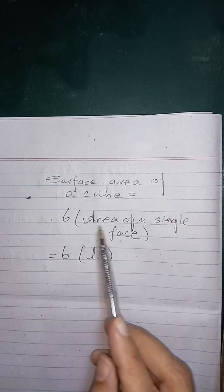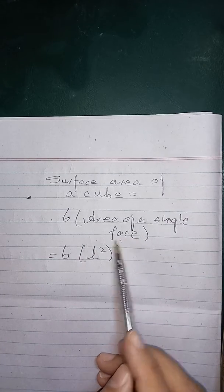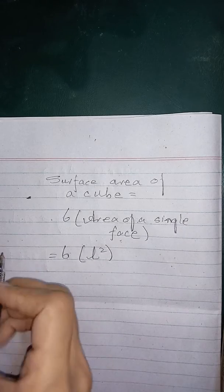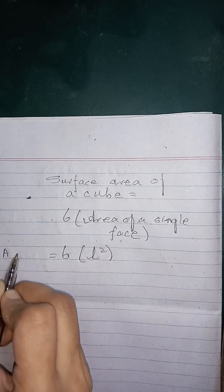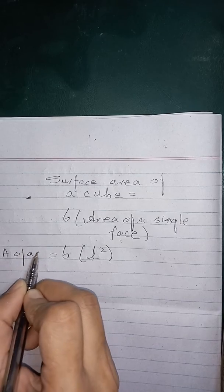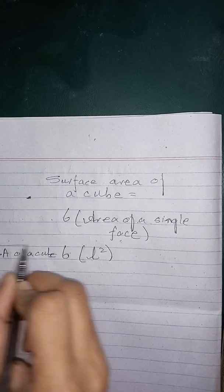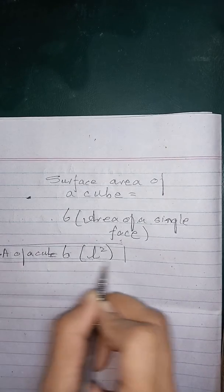What is the area of a single face? It is L times L and L square. So the total surface area of a cube will be 6 L square.